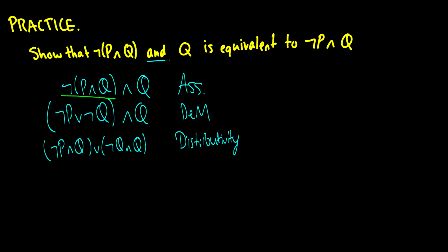Now what we can do is we know not Q and Q is always going to be false due to our lovely inverse laws. And now not P and Q or false is going to be the same thing as not P and Q and this is due to our identity law.